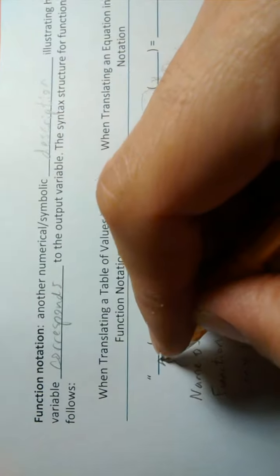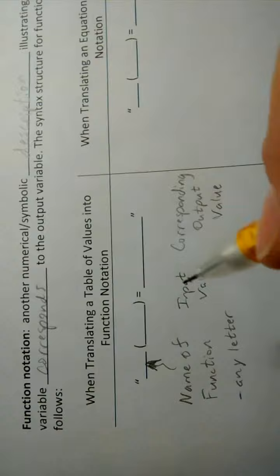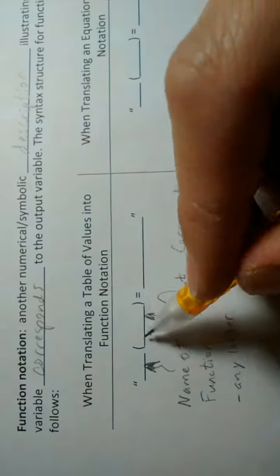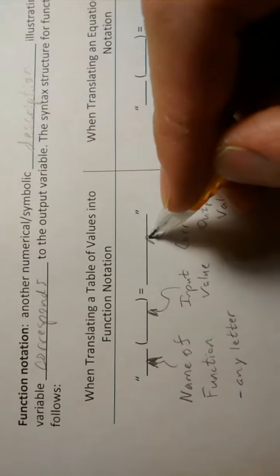These are the items that take the place of the spaces. You have the name of a function, which can be any letter, by the way, any letter. We have an input value, and then in the parentheses, and on the other side of the equal sign, we have the corresponding output value.